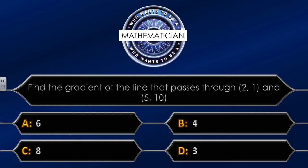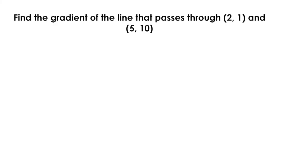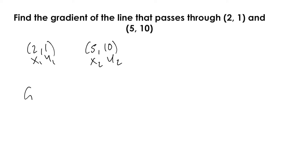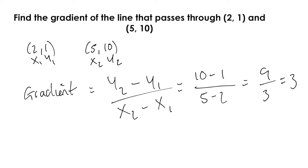The correct answer is D, three. To find the gradient, label the coordinates: (2, 1) is x₁, y₁ and (5, 10) is x₂, y₂. We use the equation: gradient equals y₂ minus y₁ over x₂ minus x₁. That gives us 10 minus 1 over 5 minus 2, which is 9 over 3. Therefore the gradient equals 3.